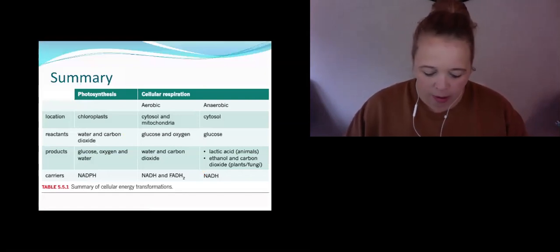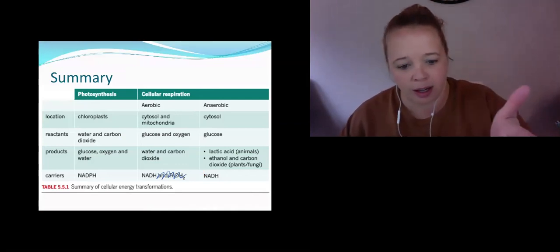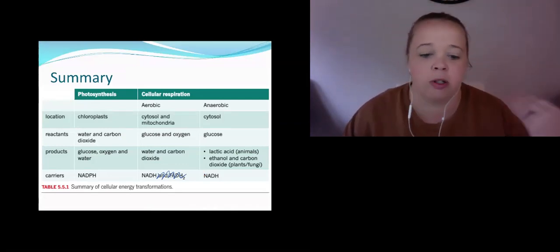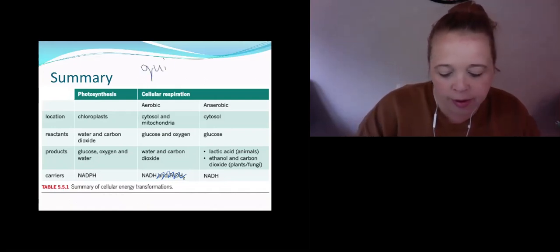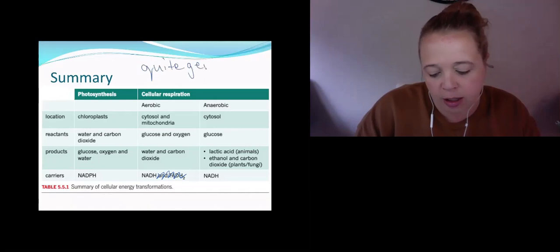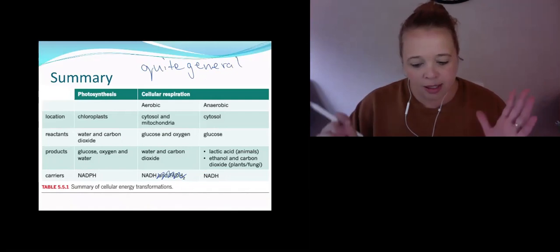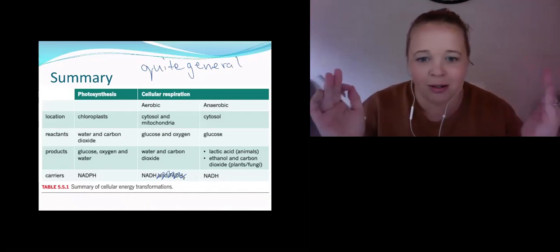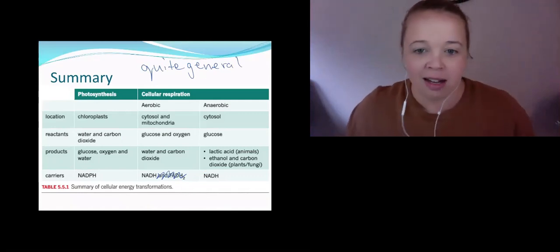And here is just one more summary here. I want you to kind of cross off this little guy here. You can see photosynthesis. Where does it happen? It happens in a chloroplast. What do you need? Water and carbon dioxide. This here is quite general. I need you to know the inputs and outputs of all of the different stages within these. But this is all of photosynthesis and all of aerobic respiration tried to be condensed into one little table for you. And that is the end of area of study one.